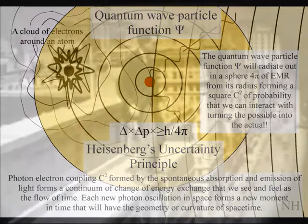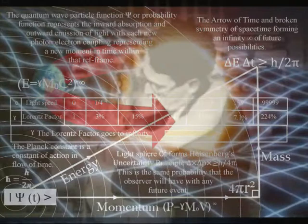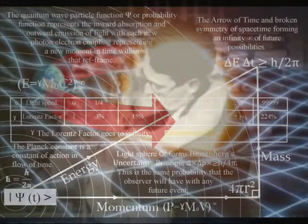This might sound far-fetched, but it is only extending Einstein's relativity to everyday objects and individuals. In the theory of general relativity, we have an interactive process. When an object moves, space-time moves relative to the energy and momentum of the object, therefore forming the curvature of space-time.